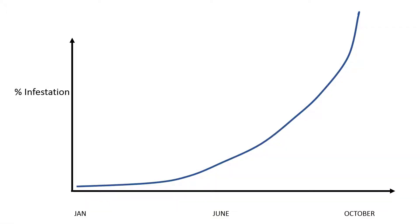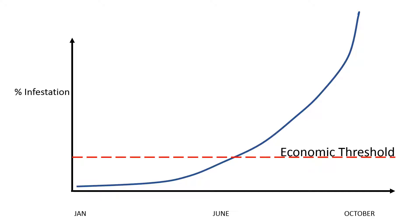On this chart we have on one axis the percent infestation of varroa over time. This is what an unchecked varroa population might look like through the season. We have the economic threshold, so it's important to keep our mite numbers below that economic threshold if we want to avoid problems. That threshold is pretty low — 3%, or 3 mites per 100 bees. If you're doing a 300-bee sample, that means 9 mites in your half-cup sample — 9 mites per 300 bees in your sugar shake or alcohol wash. So that's an important number: 3%, 3 mites per 100 bees, or 9 mites in your half-cup sample.